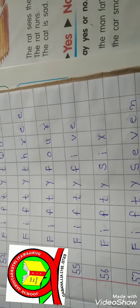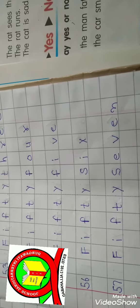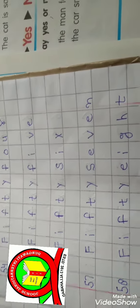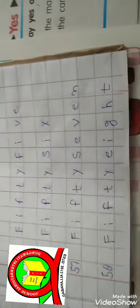F I F T Y S I X, 56. F I F T Y S E V E N, 57. F I F T Y E I G H T, 58.